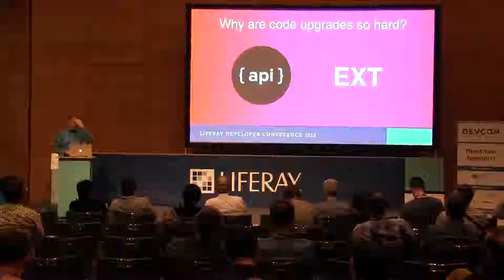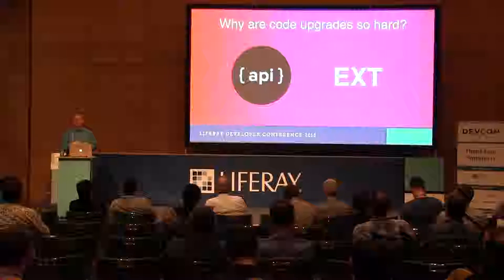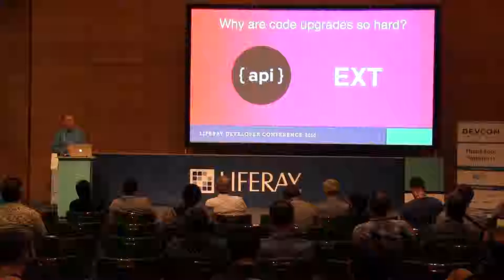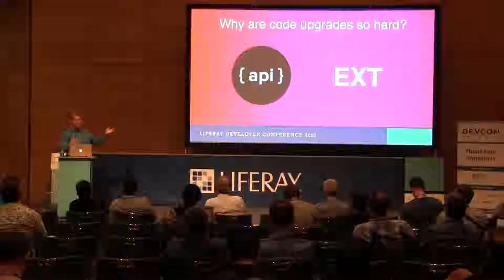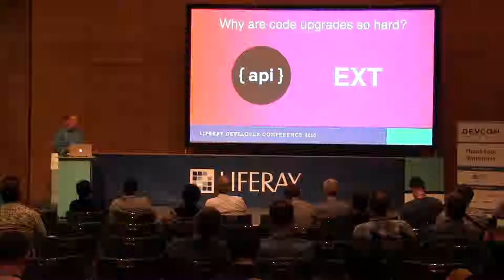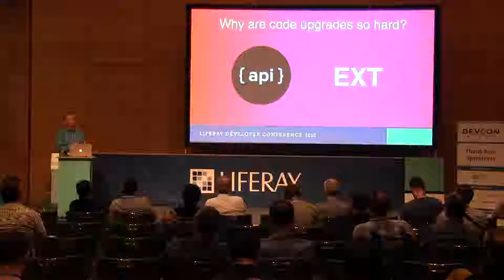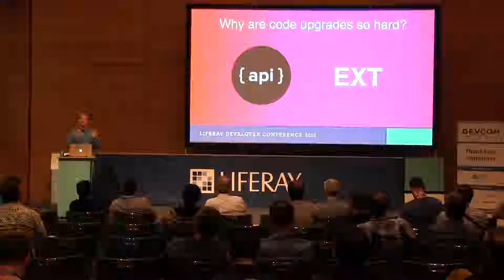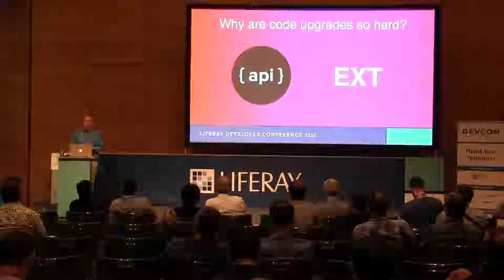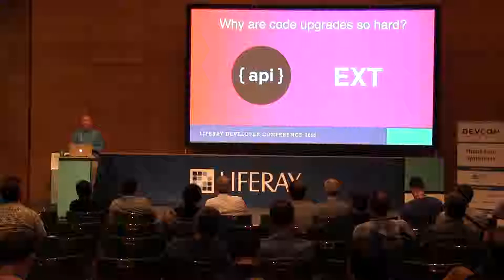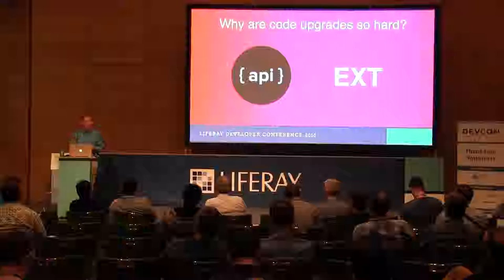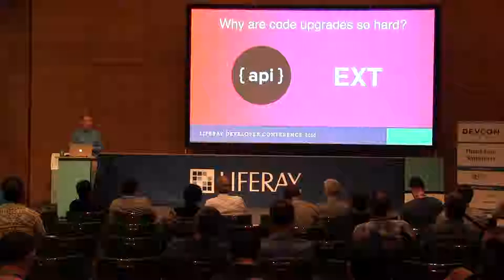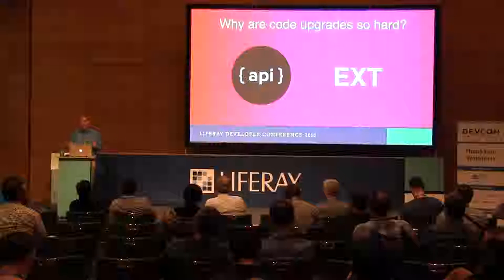The other reason why upgrades have been so hard is EXT. Liferay has always supported this idea — it's open source and we want you to be able to customize every piece. EXT came from the community and it's an amazing piece of work. We supported that and let you change out anything that wasn't even API. So imagine if our API changes so much, imagine what the internal classes do. People could do EXT and do amazing things with Liferay — and then it would break everything.